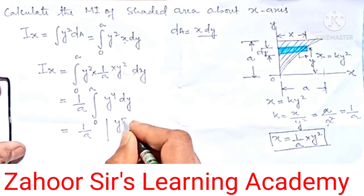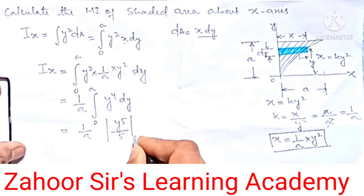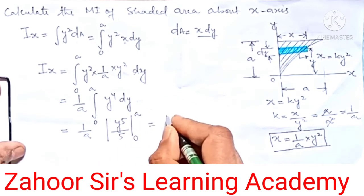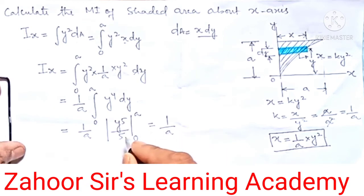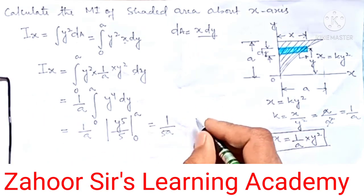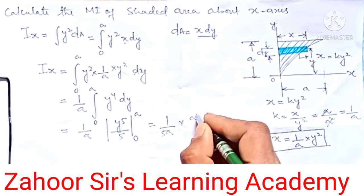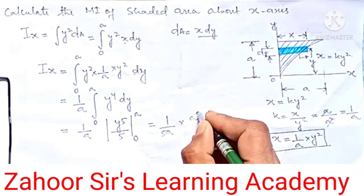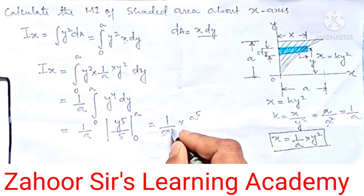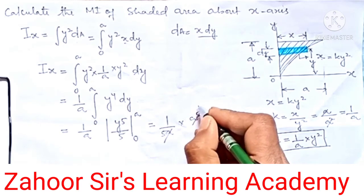That means 1/a, this 5 will go out as a constant, and it means a to the power of 5. So this one will get cancelled, that means it is a⁴.